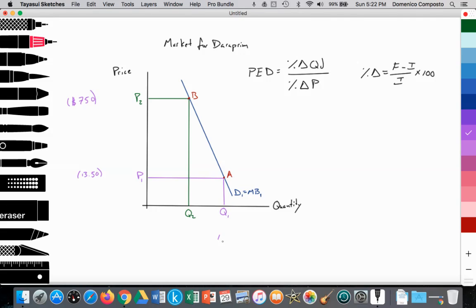So it went from $13.50 to $750 a pill. And the quantity, we'll assume, perhaps, it was starting off at 100,000 units consumed, let's say, per year, and it fell to 90,000.